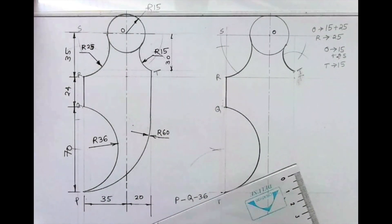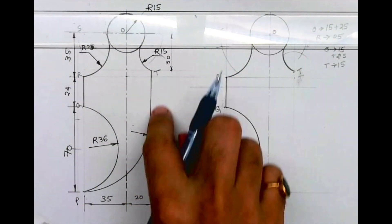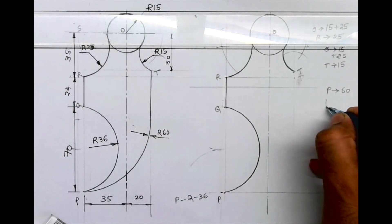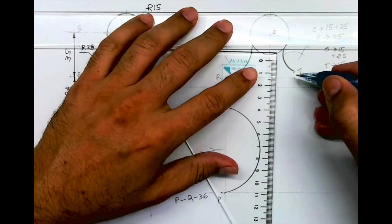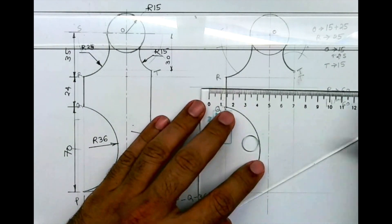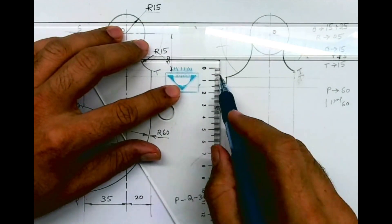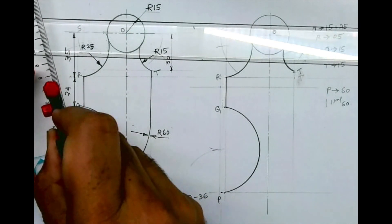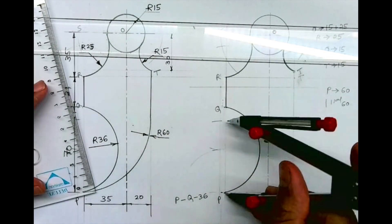After that we need to draw radius 60. To draw that, we need to draw a 60 parallel line. From this line you draw a 60 parallel line and from P cut 60. So you draw parallel to 60, and from P you cut 60 — wherever it intersects, from that point you can draw radius 60.